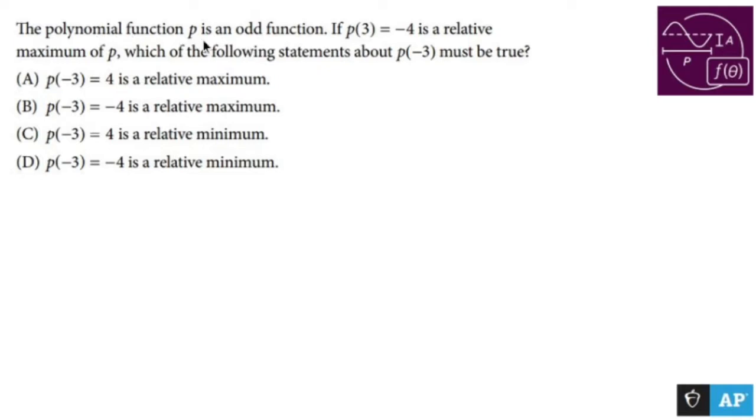The polynomial function p is an odd function. If p of 3 equals negative 4 is a relative maximum of p, which of the following statements about p of negative 3 must be true?